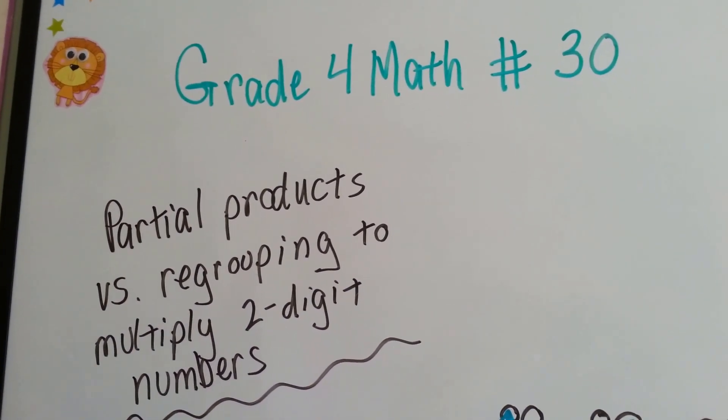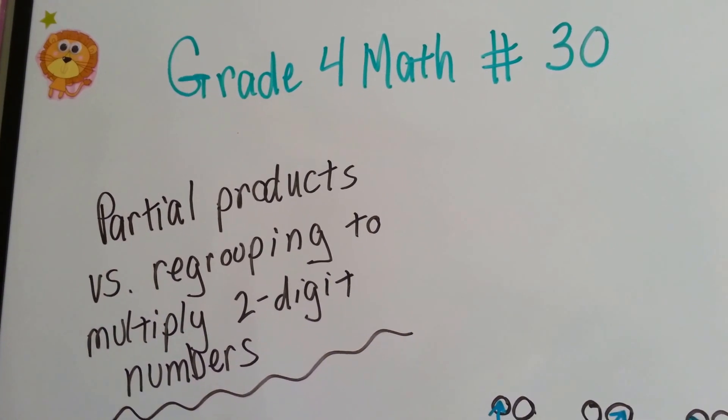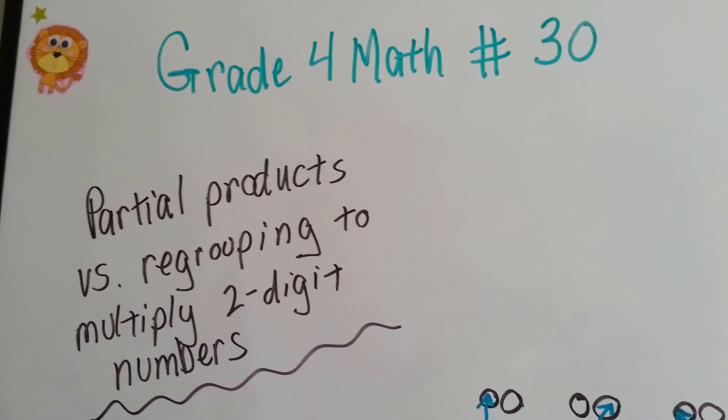Grade 4 math number 30. Partial products versus regrouping to multiply two-digit numbers.